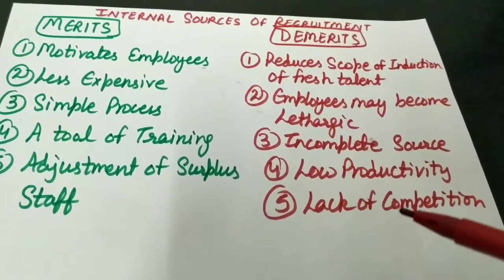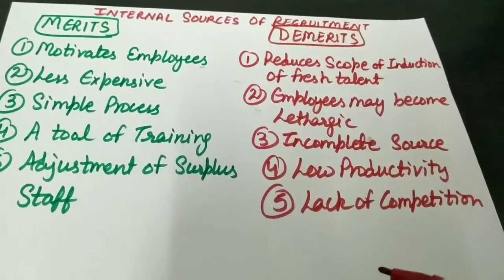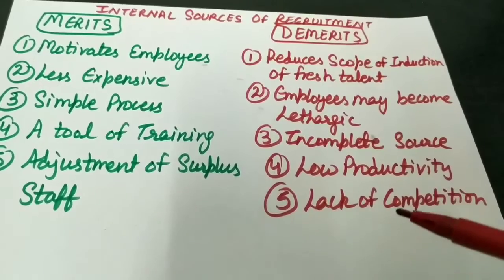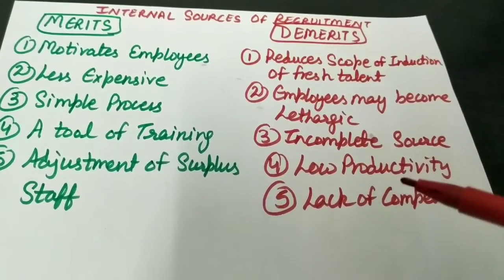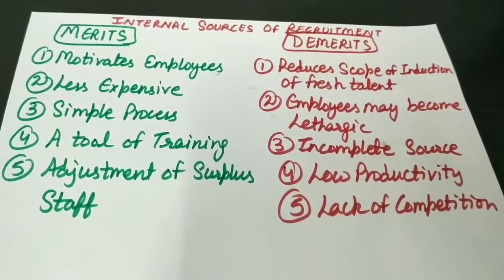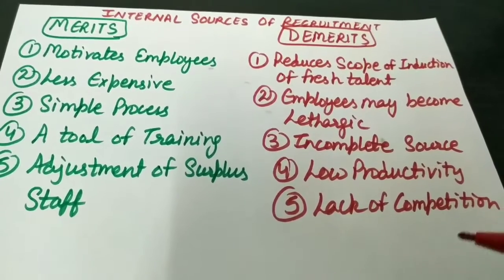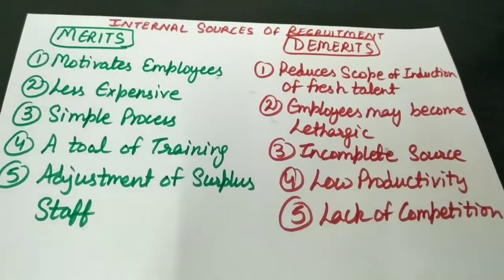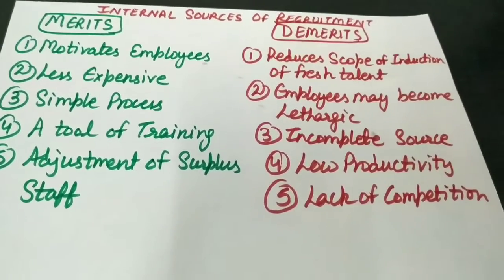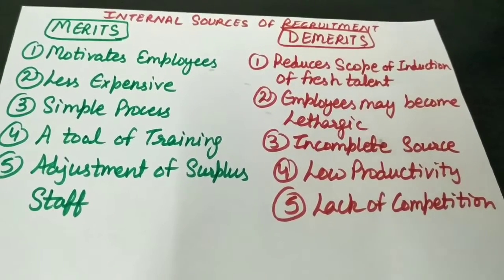Next demerit is low productivity. Jab ek employee ko frequently transfer kar rahe hain from one branch to another, from one department to another, toh it often reduces the productivity of the organization. Kyunki abhi ek employee ek jagah pe adjust hua hai, wahan ka kaam usne seekha hai, and then when he is at the learning stage, we are transferring that employee to another department. Last demerit is lack of competition. The spirit of competition among employees may be hampered, kyunki employees are expecting automatic promotions based on their seniority.